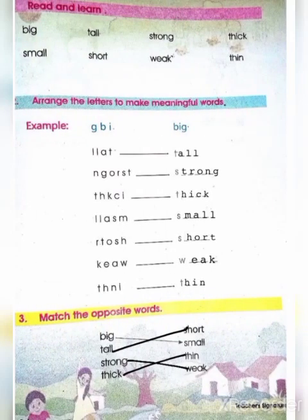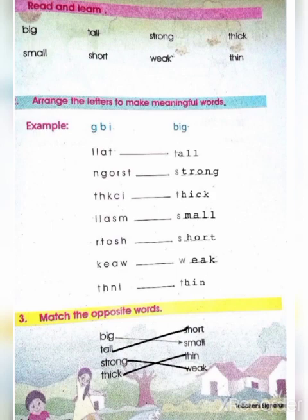Thin means patla. Padho or seekho. Big means bada. Tall means lamba. Strong means mazboot. Thick means mouta. Small means chota. Short means chota. Weak means kamjur. Thin means patla.